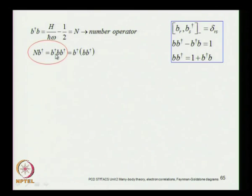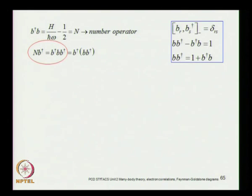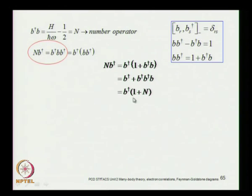Now let us work with n·b-dagger. N·b-dagger = b-dagger·b·b-dagger = b-dagger·(b·b-dagger) = b-dagger·(1 + b-dagger·b) = b-dagger·(1 + n) = b-dagger·(n + 1). So n·b-dagger = b-dagger·(n + 1).